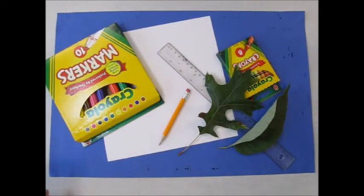Hi fourth grade! Today what we're going to do is a project called Picasso Leaves. So we're going to take leaves and make them look like they have cubism.